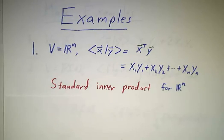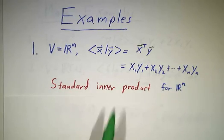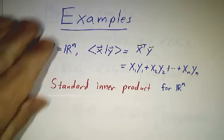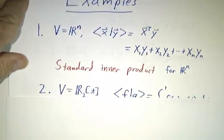And we call this the standard inner product for Rⁿ. Now, there are a lot of other inner products for Rⁿ, but this is the simplest one. It's the most convenient one. This is used a lot more than any of the others.